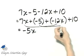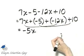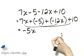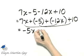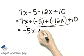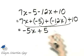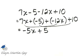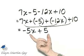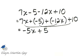These two are like terms: negative 5 plus 10, that is 5. So simplified, I have negative 5x plus 5. I can go no further because these are unlike terms.